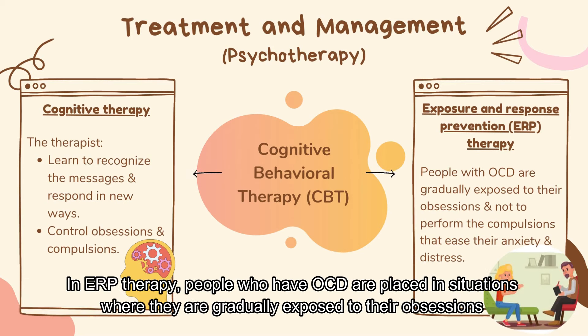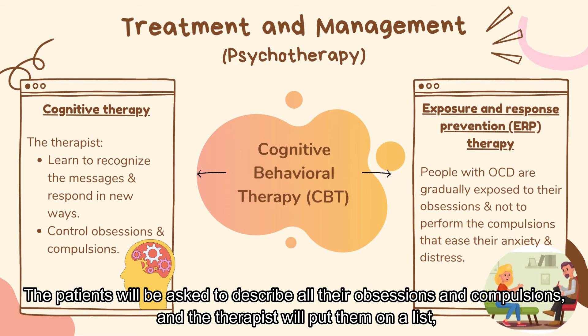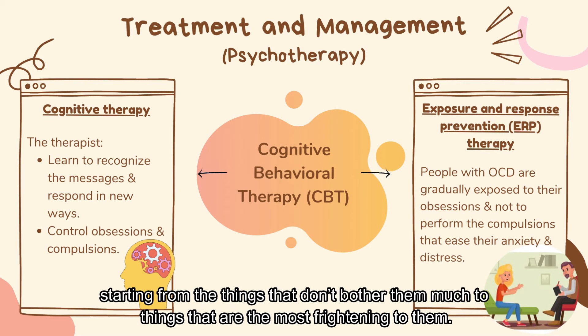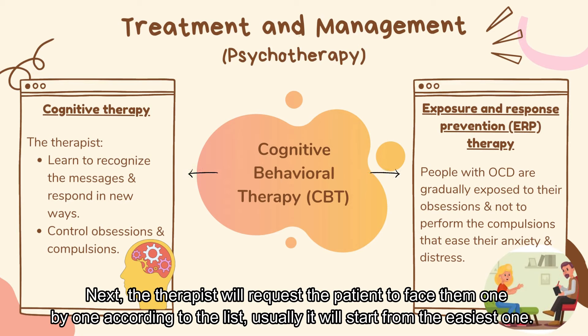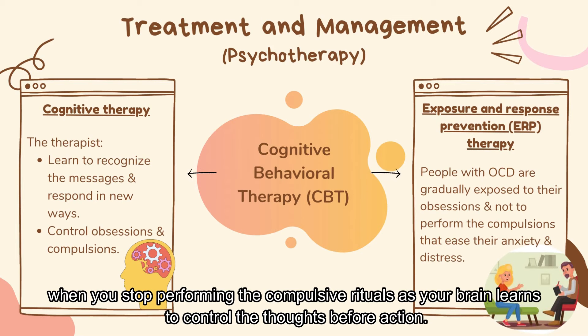In ERP therapy, people who have OCD are placed in situations where they are gradually exposed to their obsessions and asked not to perform the compulsions that usually ease their anxiety and distress. The patients will be asked to describe all their obsessions and compulsions, and the therapist will put them on a list starting from the things that don't bother them much to the things that are most frightening. The therapist will then request the patient to face them one by one. When exposed to that fear repeatedly over time, anxiety shrinks until it is barely noticeable or even fades entirely, as the brain learns to control the thoughts before action.